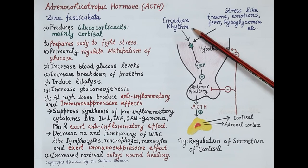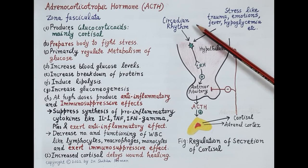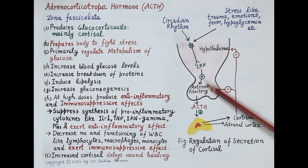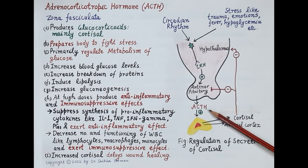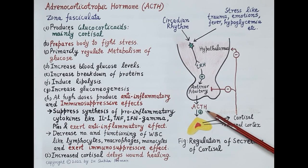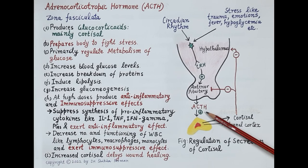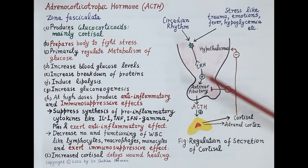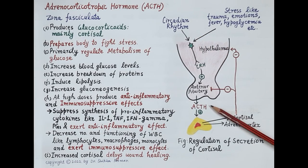Now let's understand regulation of secretion of cortisol. Circadian rhythm regulates the sleep-wake cycle of the body. This circadian rhythm induces natural release of adrenocorticotropic hormone from the anterior pituitary. ACTH levels are at peak in the early morning — between 6 to 9 AM — and these levels decline during the day, being lowest at night between 11 PM to 2 AM.